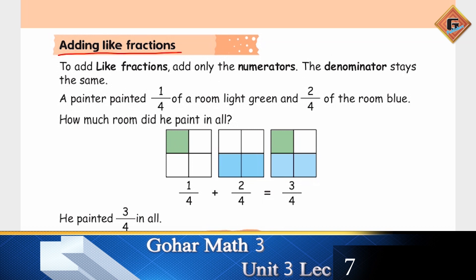Like fractions are those whose denominators are the same. To add like fractions, add only the numerators. The denominator stays the same.